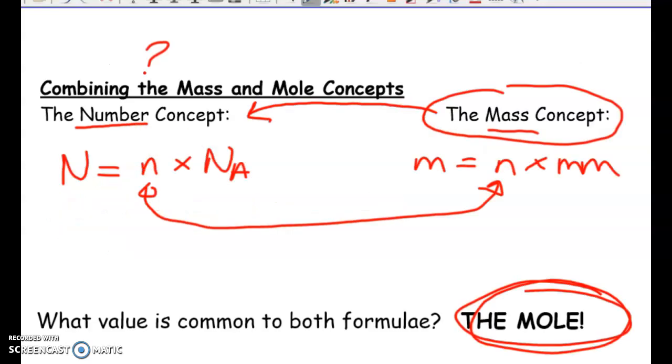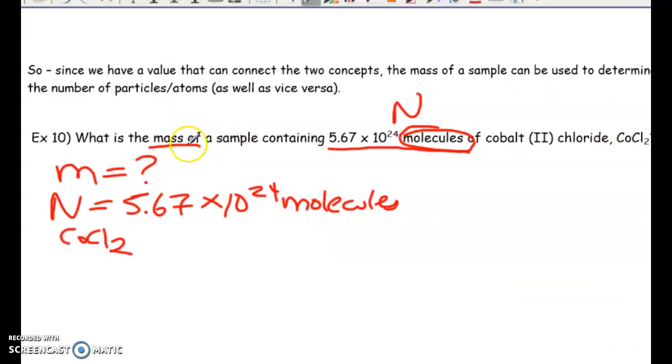So if we go back to this formula, we want to solve for mass. Well, we need moles and we need molar mass. There is no information in this question about moles, but we have the number of molecules. So once we have that, we can solve for the number of moles. So we have to solve for moles first, and then we can solve for our final mass.